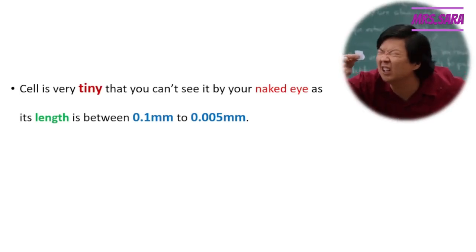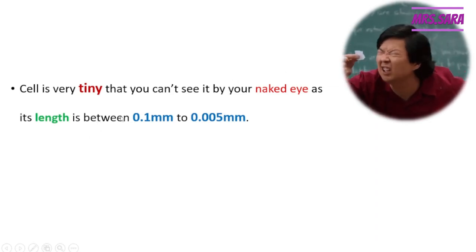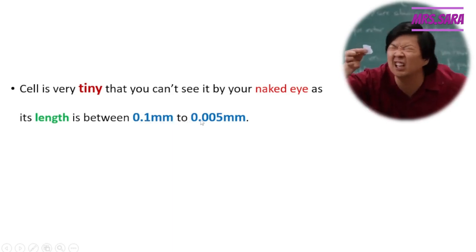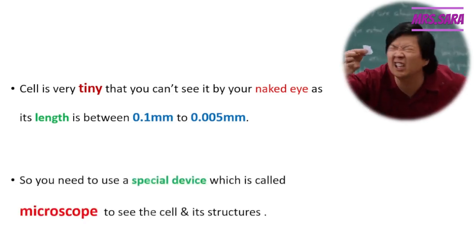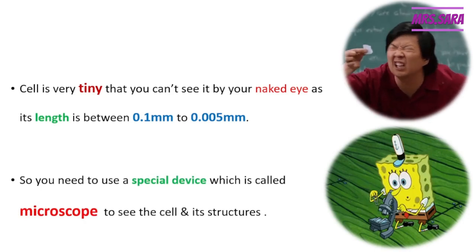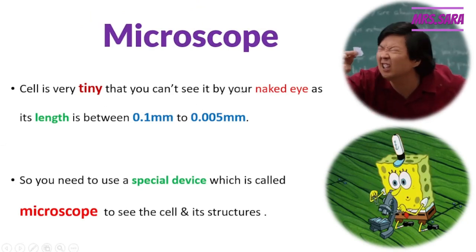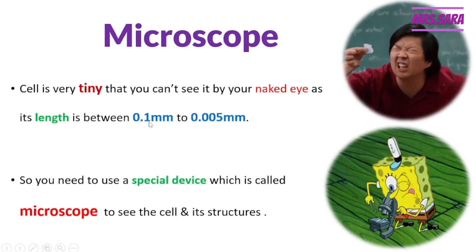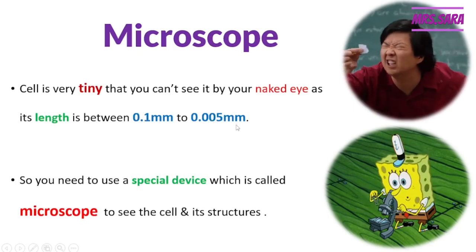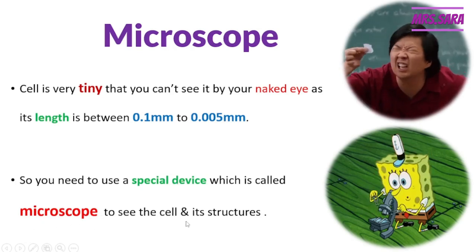Cell is very tiny, Primary 6. You cannot see it with your naked eye, as its length is between 0.1 millimeter to 0.005 millimeter. It is very, very tiny. So, we need to use a special device to see the cell. This device is called a microscope, which allows us to see the cell and its structure.